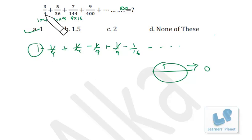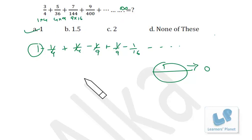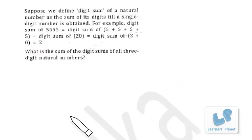Whenever you see this sort of infinite sequence — or sometimes n terms, 10 terms, or 20 terms — there is always a clue in the denominator. Now suppose we define the digit sum of a natural number as the sum of its digits until a single digit number is obtained.